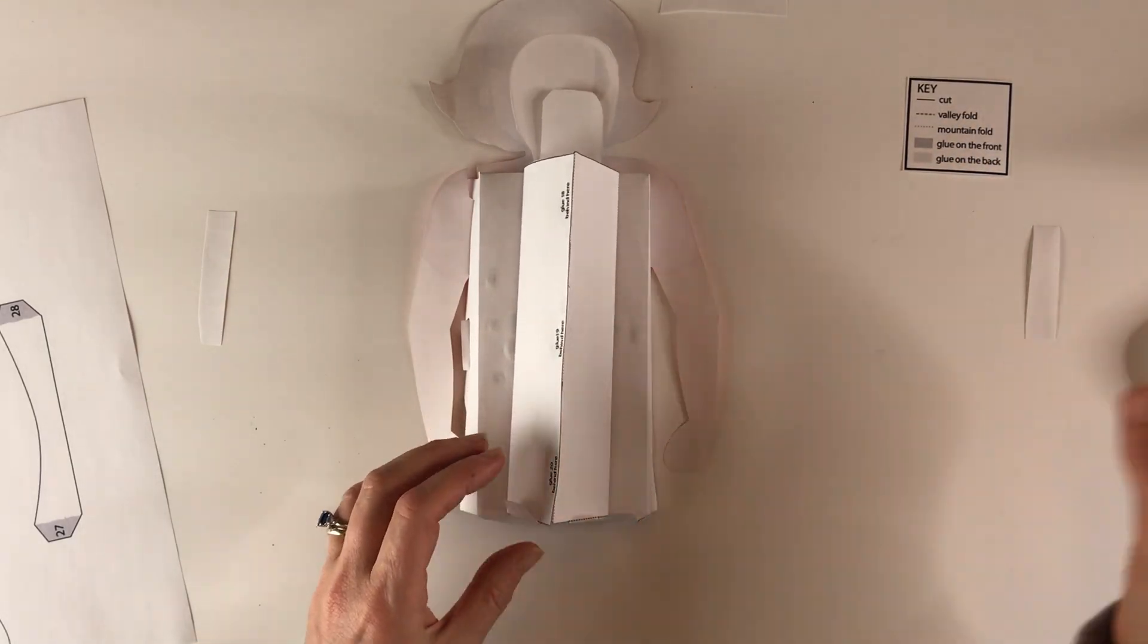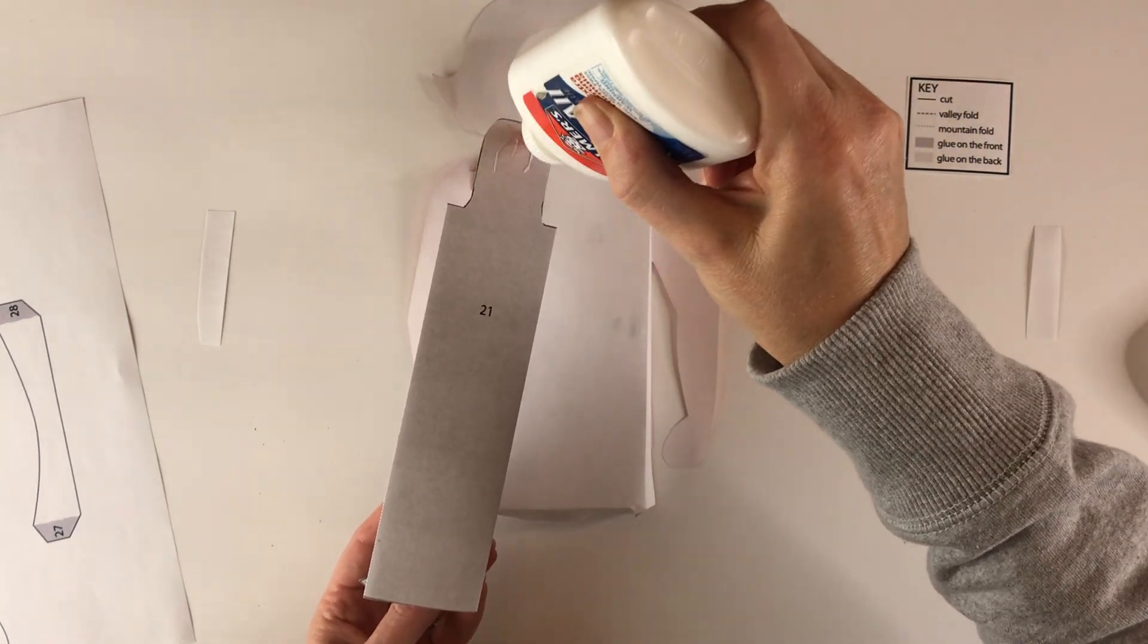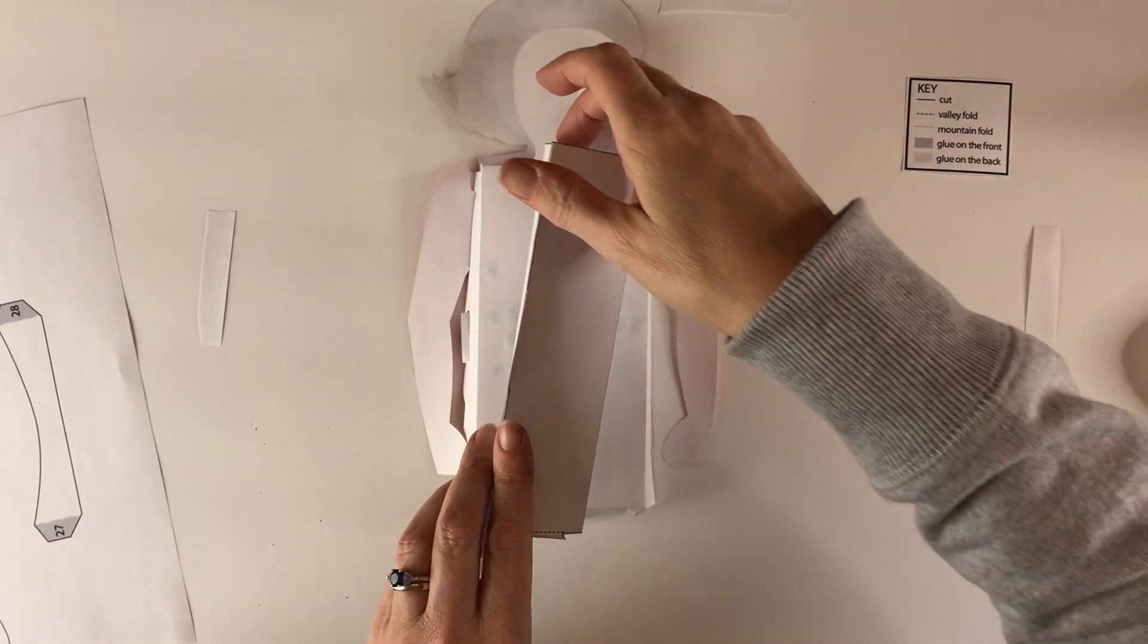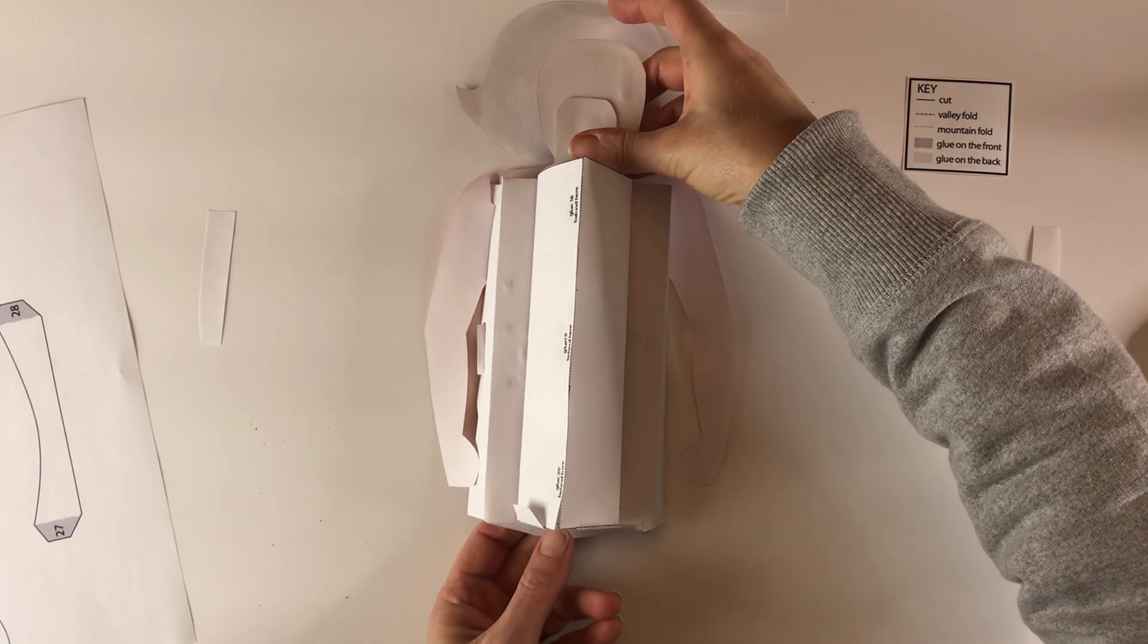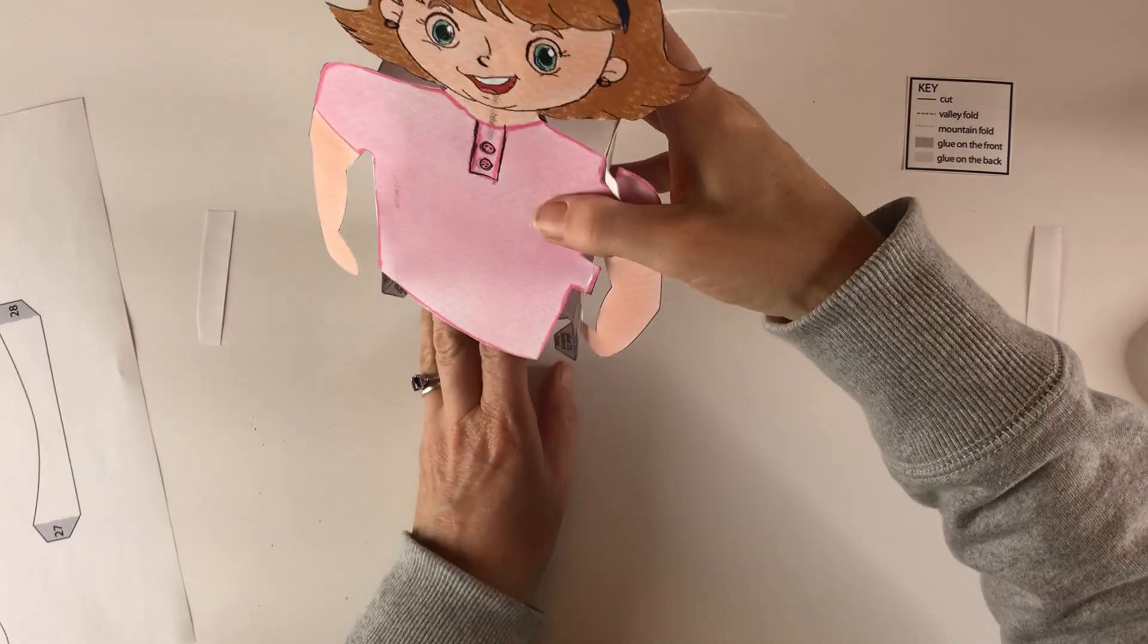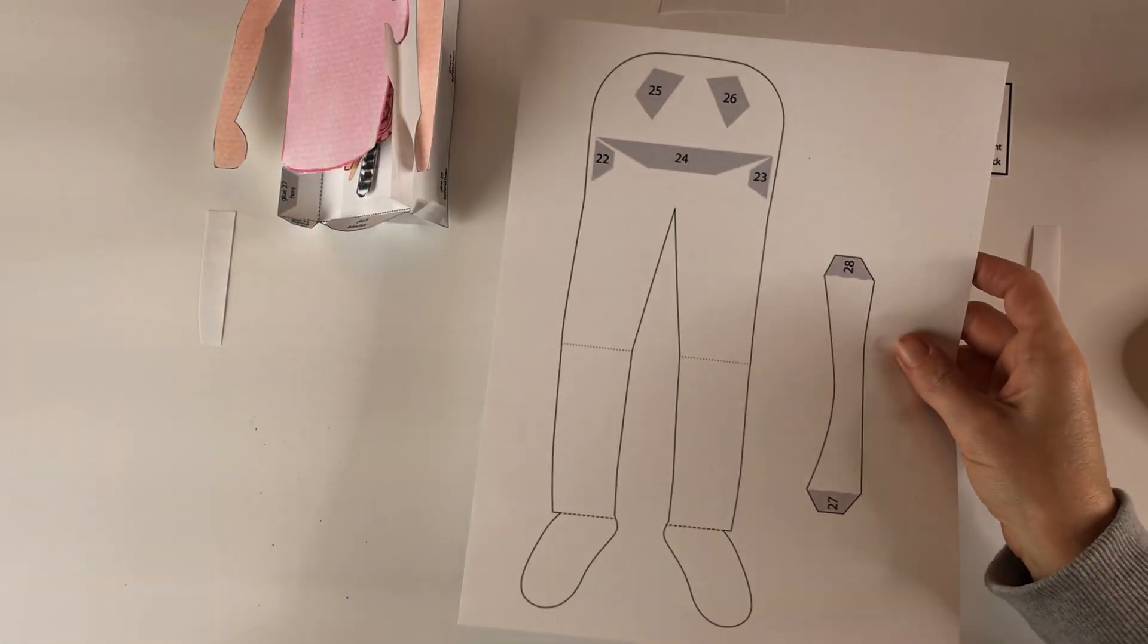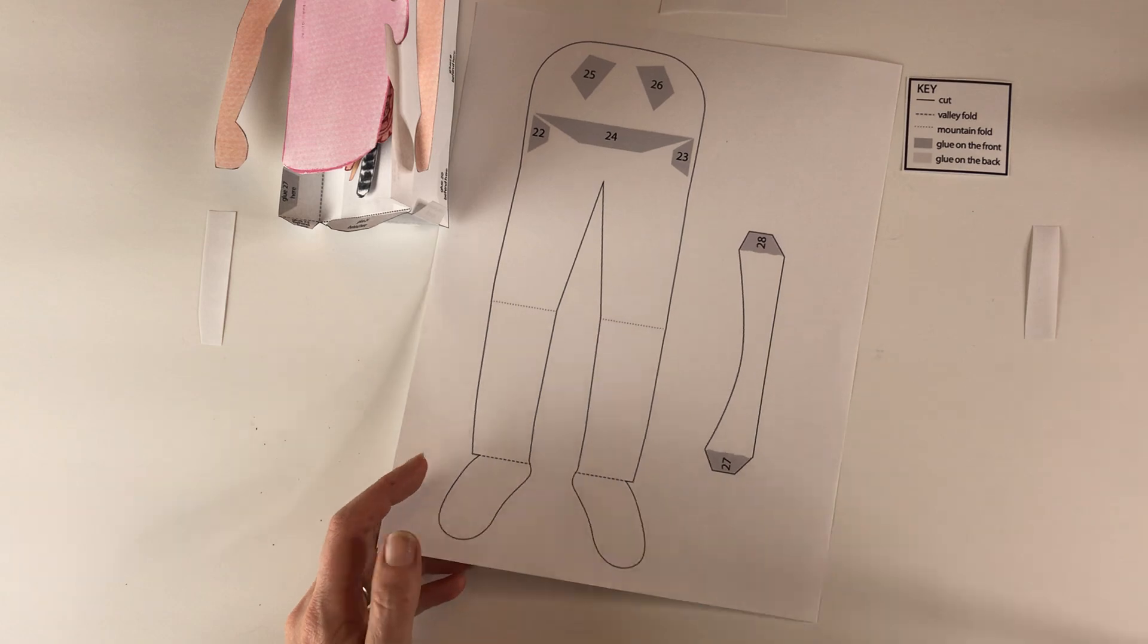So this part goes on the back of the model right here, lined up at the bottom. Make sure you line up the bottom down here when you do that. You can see right there. Next step is the legs, so she's going to sit on the legs right here. So you cut, color, and cut this out.